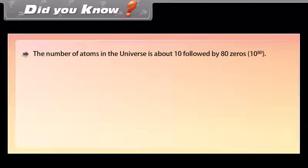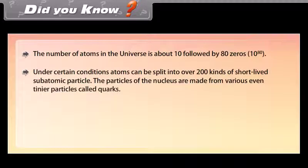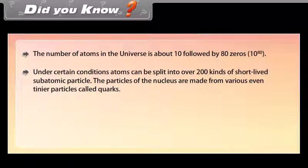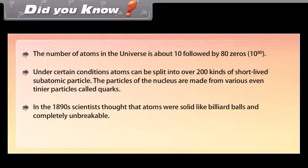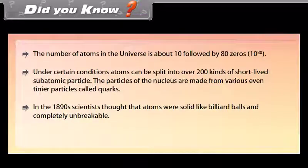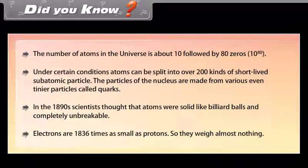Did you know? The number of atoms in the universe is about 10 followed by 80 zeros. Under certain conditions, atoms can be split into over 200 kinds of short-lived sub-atomic particles. The particles of the nucleus are made from even tinier particles called quarks. In the 1890s, scientists thought that atoms were solid like billiard balls and completely unbreakable. Electrons are 1836 times smaller than protons, so they weigh almost nothing.